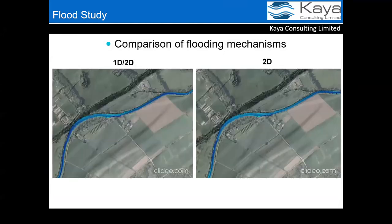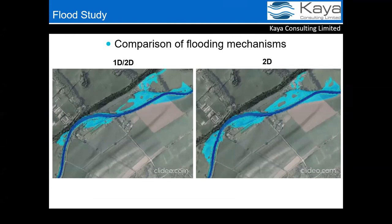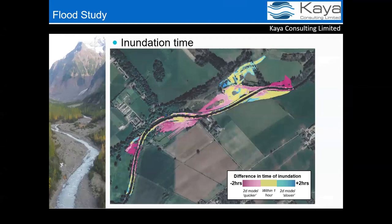Comparing flooding mechanisms with the 1D-2D on the left and 2D on the right: the 2D model generally sees the river spilling its banks sooner, as indicated by the pink, while it's rare for the 1D-2D to inundate an area earlier, which would be shown by blue. This potentially indicates that the weir discharge coefficients of the link lines should be modified — mainly increased — to allow more spilling from the 1D channel into the 2D floodplain.